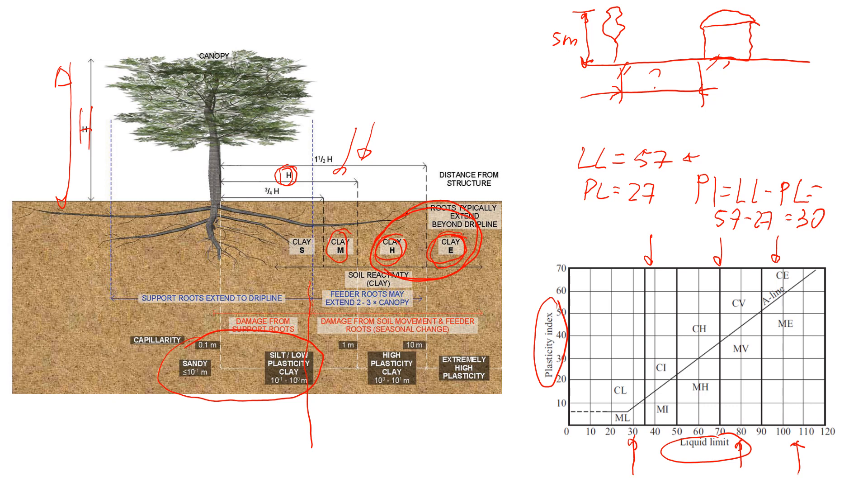Now let's classify the soil. We have liquid limit 57 here and plasticity index 30 here. This is the point. We have high plasticity clay.